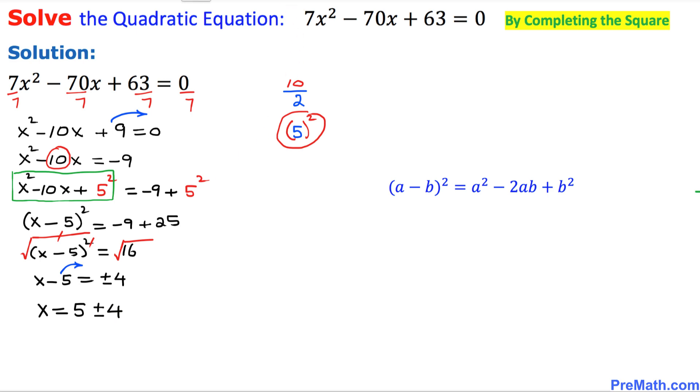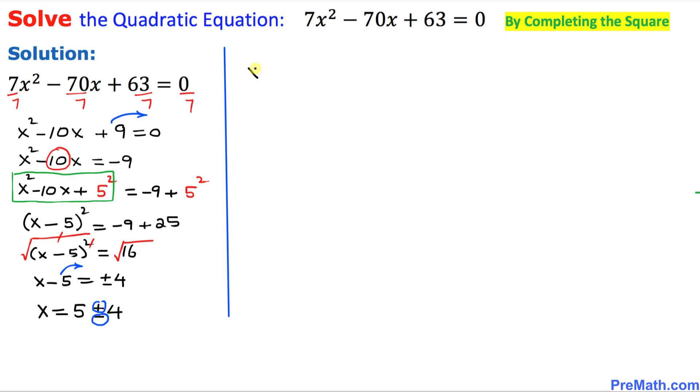The next step is we are going to split these numbers along these signs positive and negative. So on this side I can write x equal to 5 plus 4, and on this side I can write x equal to 5 minus 4. Once again, the plus sign is right up here and the minus over here where I split.